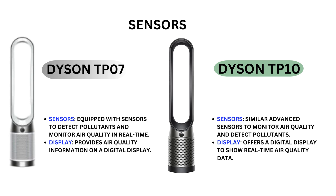Sensors — Dyson TP-07: equipped with sensors to detect pollutants and monitor air quality in real-time. Display: provides air quality information on a digital display. Dyson TP-10: features advanced sensors to monitor air quality and detect pollutants, and offers a digital display to show real-time air quality data.